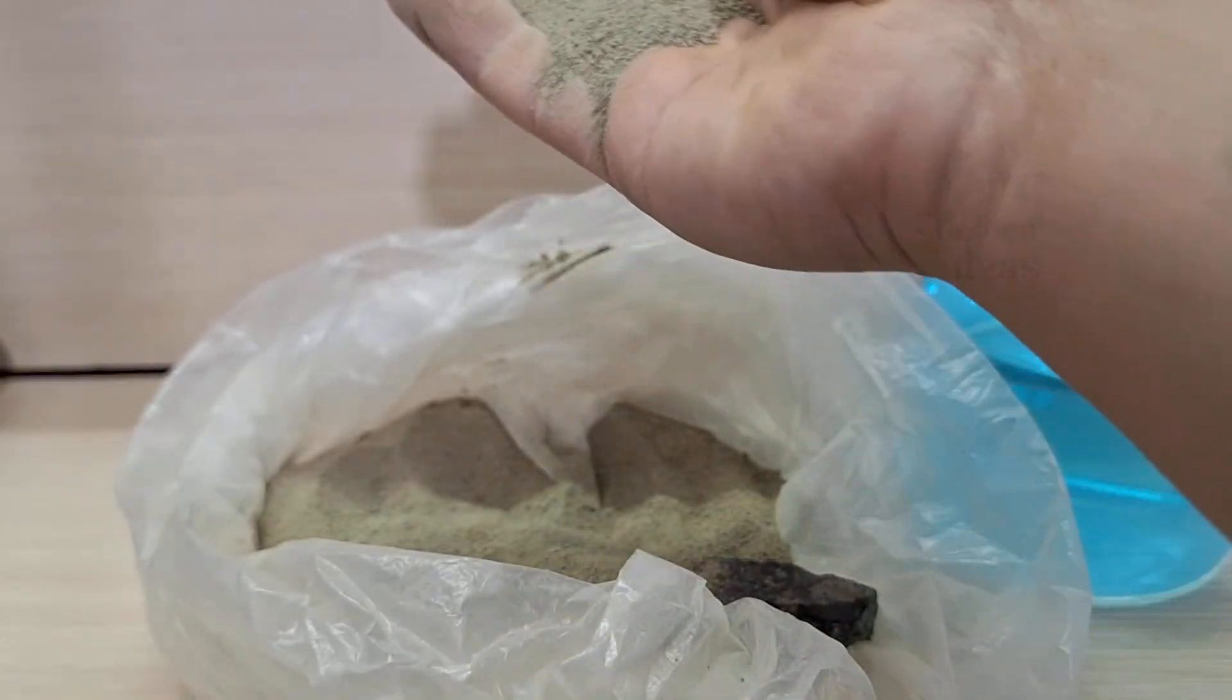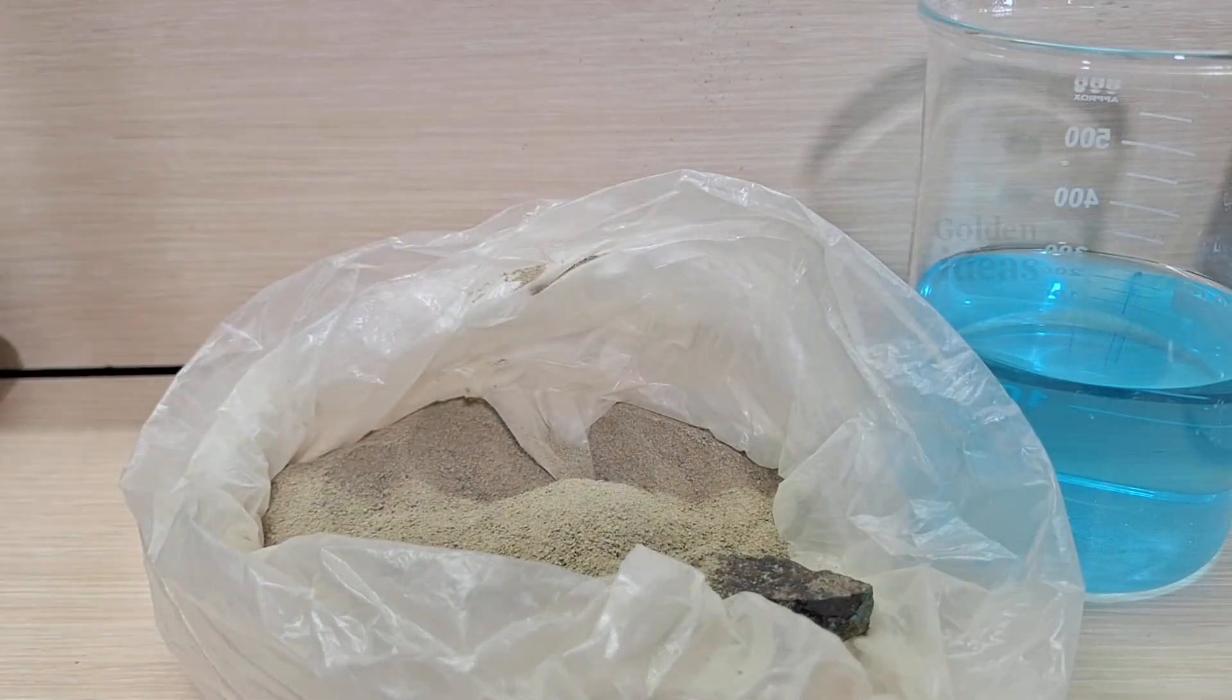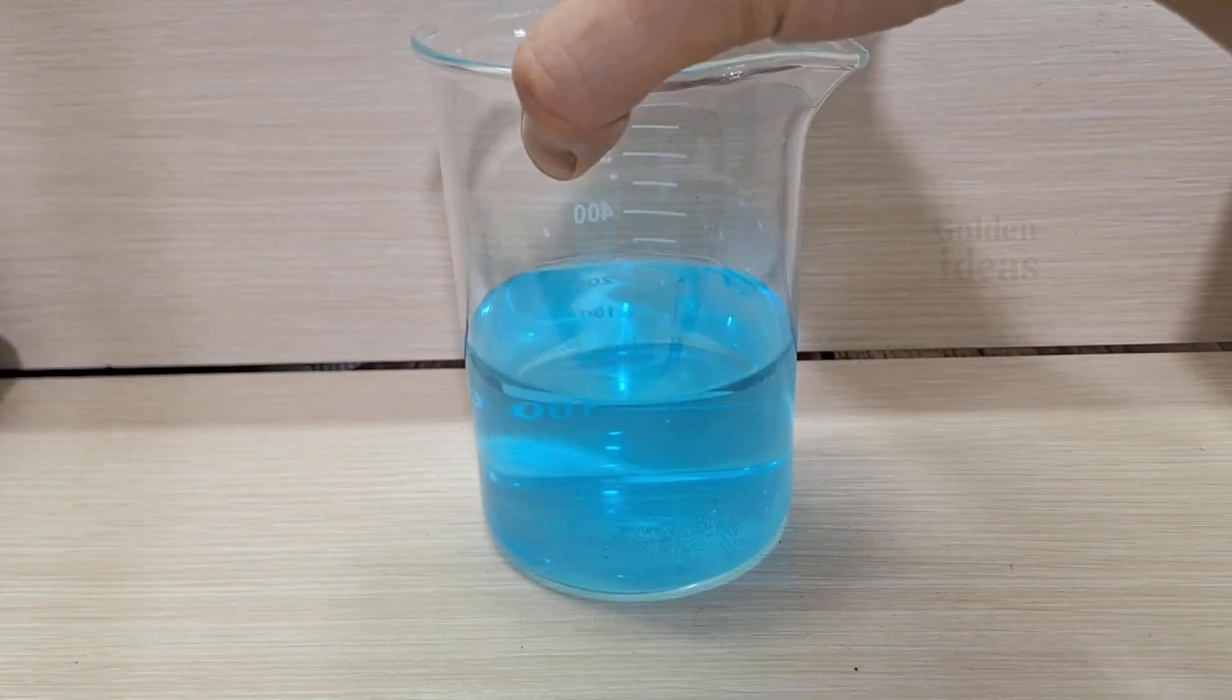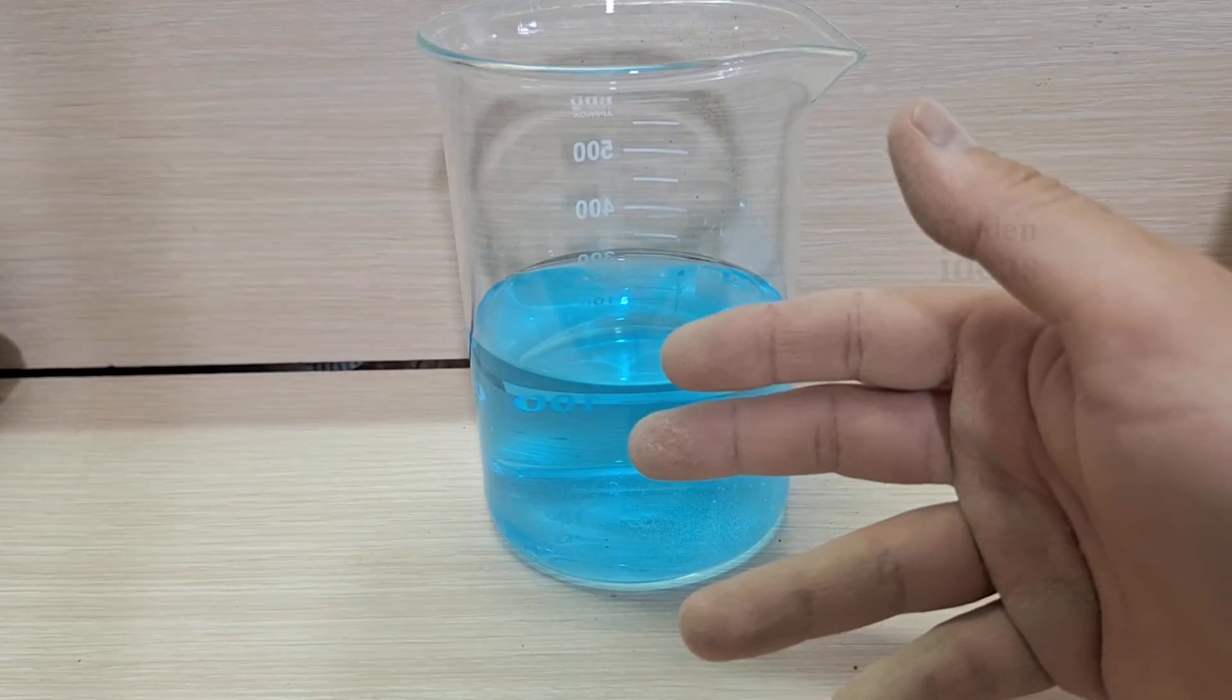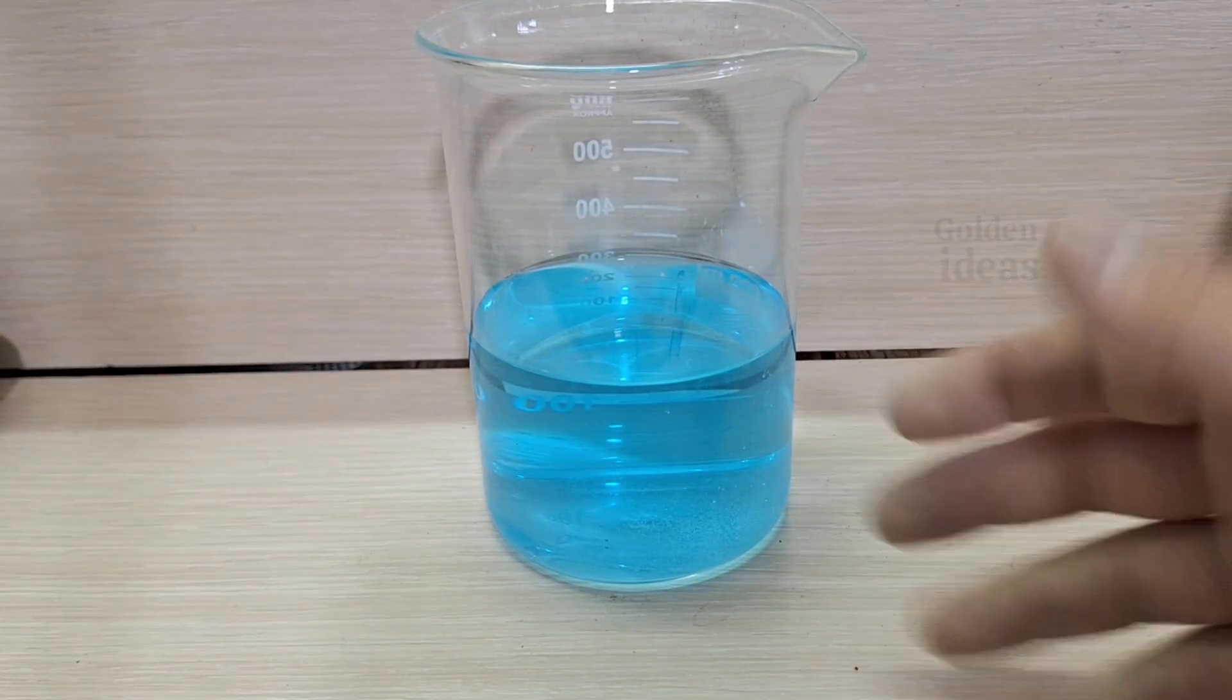This blue solution is the chloride extract obtained from this rock. This blue chloride solution contains gold, silver, and copper. To prepare it, simply dissolve the powdered rock in aqua regia and place it in a warm environment, like under direct sunlight. The heat helps the metals dissolve more effectively.